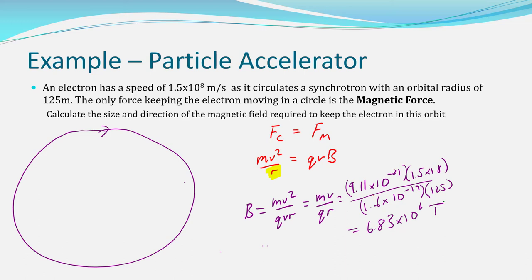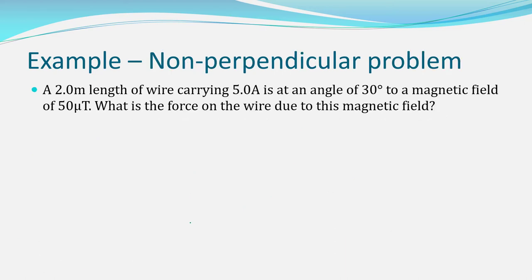Here is an example of a non-perpendicular problem — where the current and the magnetic field are neither at right angles nor parallel. If they're parallel, there's no force. But in this case, the wire is at a 30-degree angle to the magnetic field. Knowing the angle between the field and the wire, find the perpendicular component of the wire to the field, and then calculate the force.